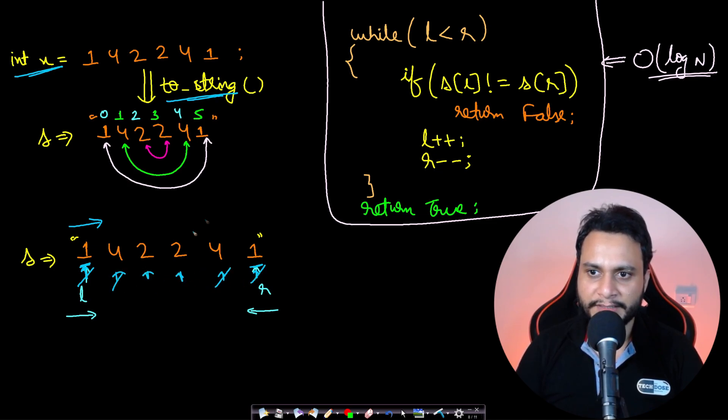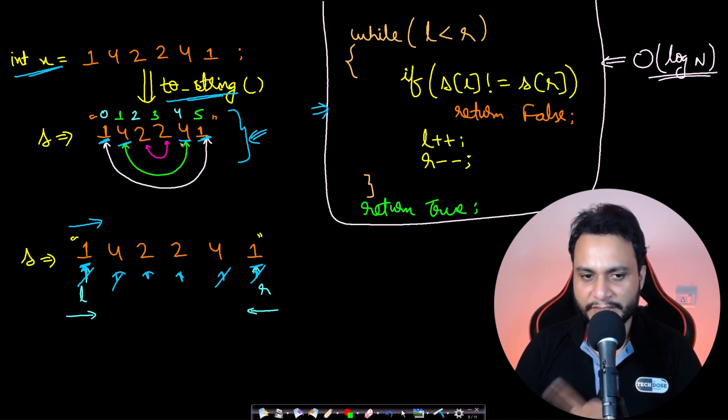Your left should equal right. If equal, move your left to the right and move your right to the left, and keep checking until l becomes equal to r or l exceeds r. This is a simple code to check if a given string is a palindrome using two pointers.